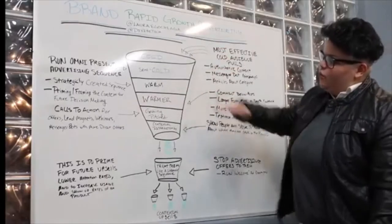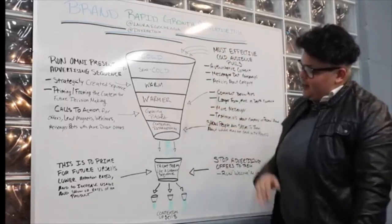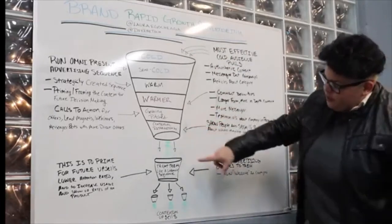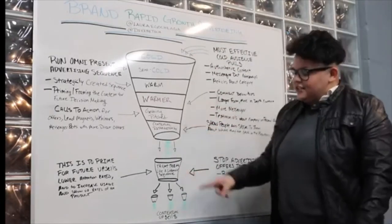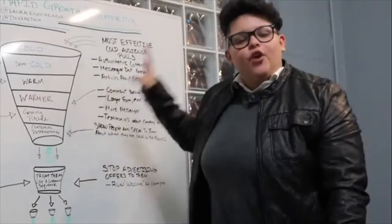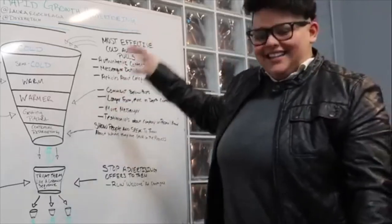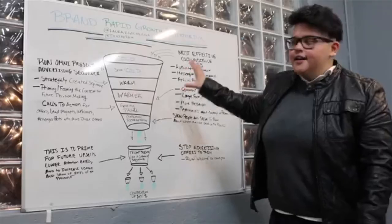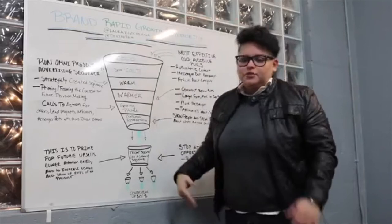You go from cold to semi-cold, warm, warmer, getting pitched, contextual retargeting. Once they've actually purchased, you treat them like a customer and you put them in a sequence to get contextual upsells. This is how we do marketing for our clients. This is how we get 7x ROI, because we put everybody through this process.